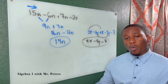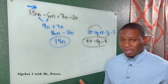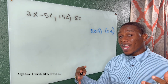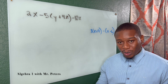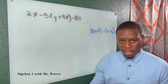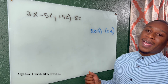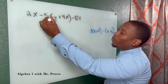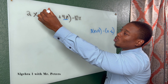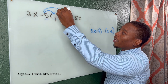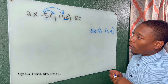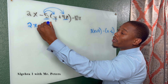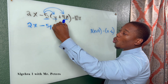The next concept is simplifying expressions using the distributive property. When you hear distributive property, always think multiplication in parentheses. We're going to have an outside term — negative 5 in this problem — and we multiply it by both terms inside the parentheses. So 2x stays the same, and we get negative 5y minus 20z.